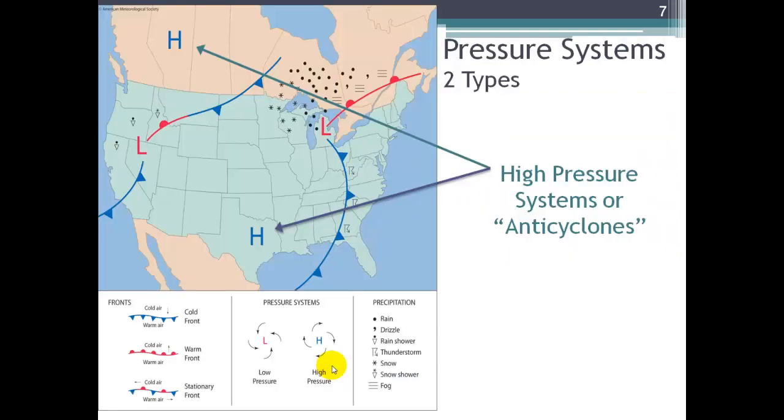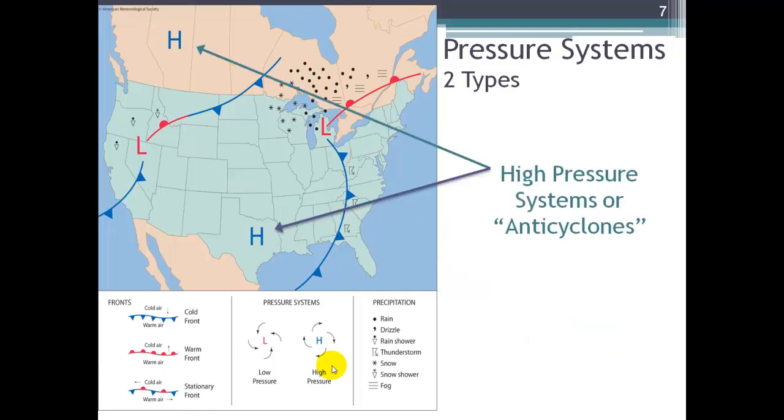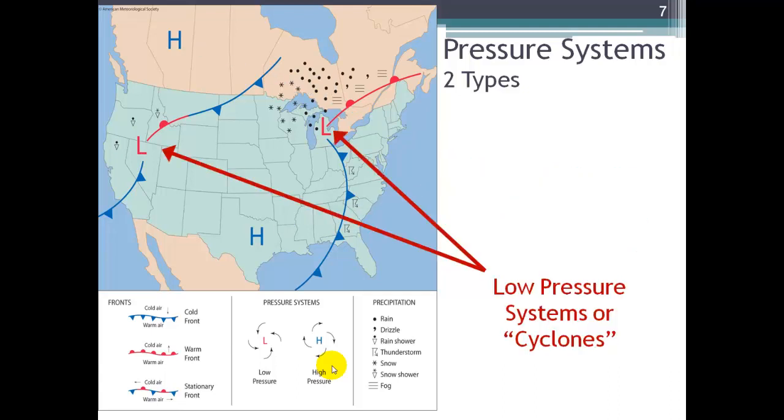When we talk about weather, there's a couple of things that we'll just mention here. And these are topics that we'll go into much more detail over the course of this meteorology class. The first deal with pressure systems. And there's two types. We have high pressure systems and we have low pressure systems. High pressure systems are sometimes called anti-cyclones. And low pressure systems are called cyclones.